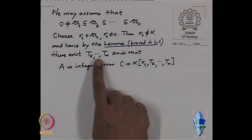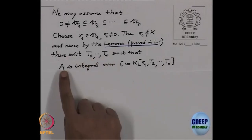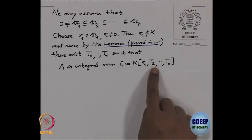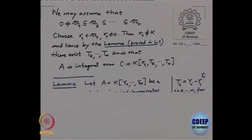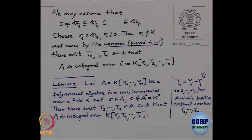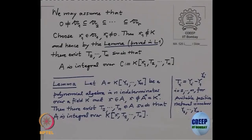Setting A' = K[T2,...,Tn] and contracting the given chain of ideals to A', we get a chain — some ideals may coincide but that doesn't matter, and the last ideal remains proper. By induction, since A' is generated by fewer elements, there exist X2,...,Xn in A' such that A' is integral over the subalgebra B' generated by X2,...,Xn, these are algebraically independent, and the contracted ideals to B' are generated by the variables as required.